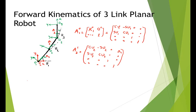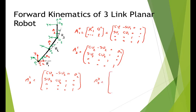For the transformation from frame 3 to frame 2, the rotation is by angle nu3 around Z, and the displacement is A2 along X. For the last transformation — frame 4 to frame 3 — frame 4 does not rotate with respect to frame 3 since there are no more joints, so the rotation matrix is the identity matrix (not zero — zero rotation means identity). The displacement is A3 along X only.